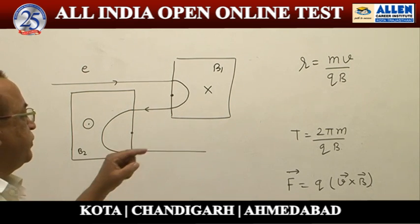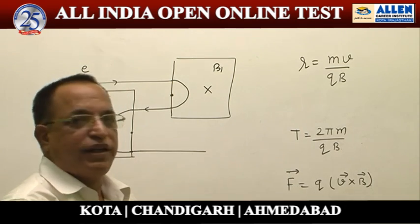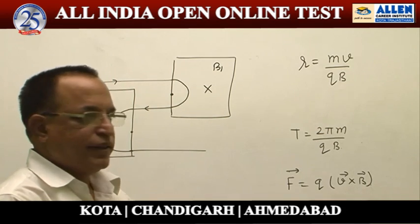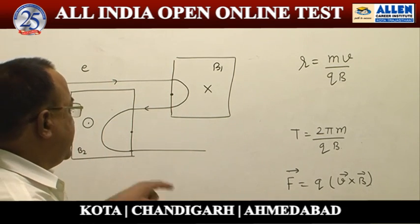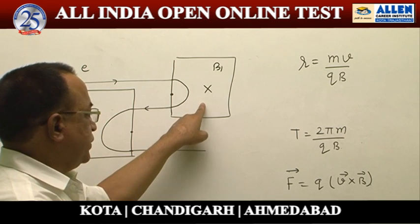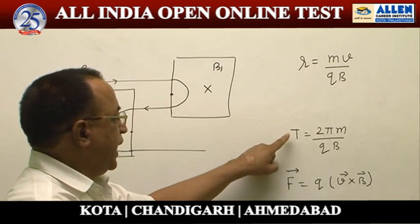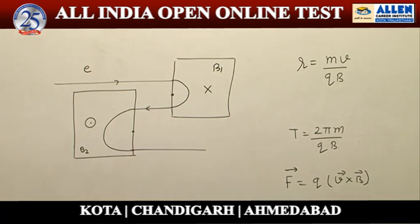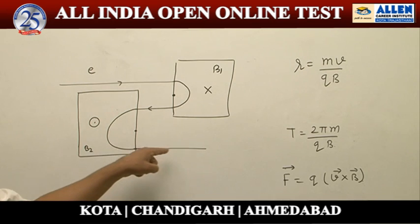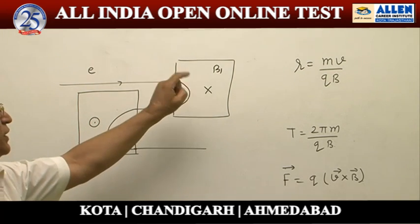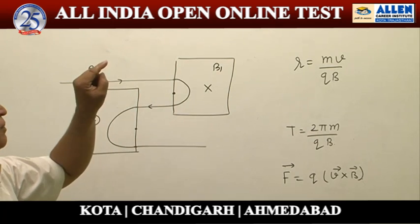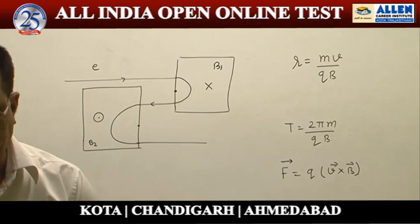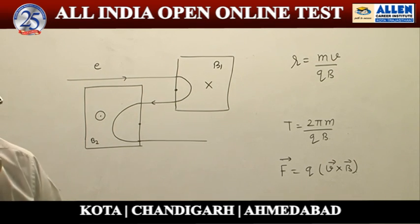B also decides the time period. The particle is the same in both regions, so M/Q is the same. But since B is greater in the first region, the time taken by the particle in that region will be less. So the time period in the second region is more, magnetic field in the first region is inward and in the second region is outward. Hence our answer is option 1.